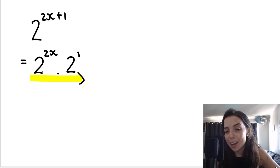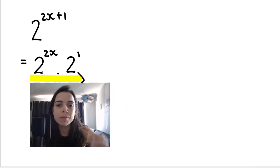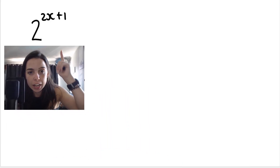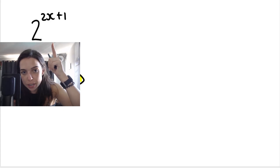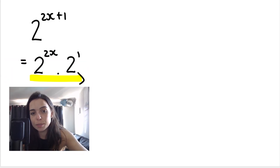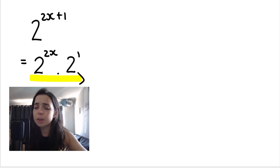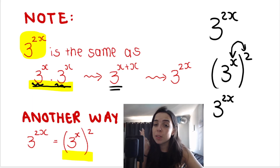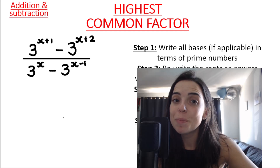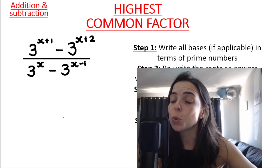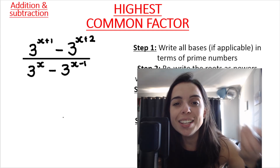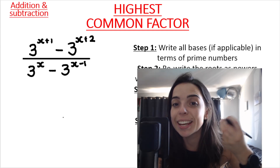We're going to focus on highest common factor in this video. But a quick recap from the previous video: an alternative way to write this expression is shown here. And here are some alternative ways to write three to the power of 2x. Now we're going to jump into a proper highest common factor example.